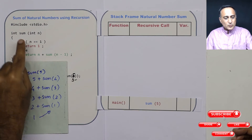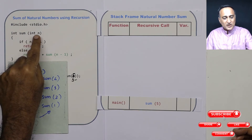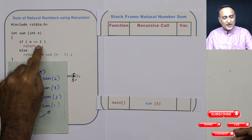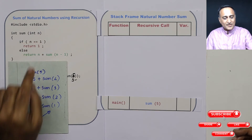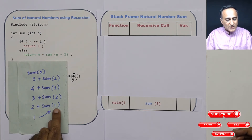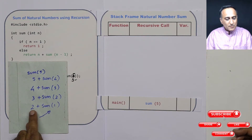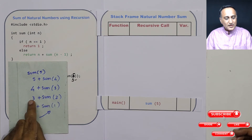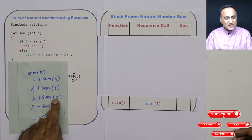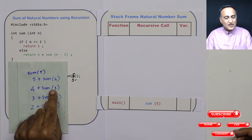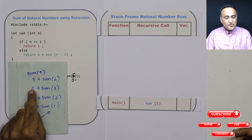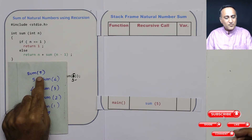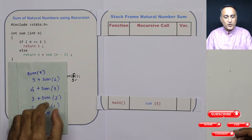When n becomes 1 and I call sum, n is equal to 1, so I return 1. Now I am able to substitute this sum of 1 with 1. So I get 2 plus 1 as 3, which happens to be sum of 2. Then 3 plus 3 is 6, which happens to be sum of 3. Then 6 plus 4 is 10, which happens to be sum of 4. Finally, 10 plus 5 is 15, which is the sum of natural numbers from 1 to 5.